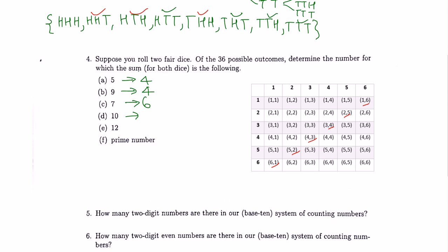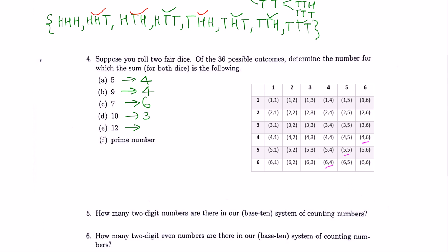How many ways can we get a sum of 10? That's (6,4), (5,5), (4,6) — so there are 3 ways to get a sum of 10. And how many ways to get a sum of 12? Just 1, because 6+6=12 is the only case.